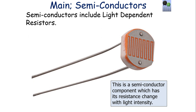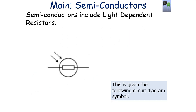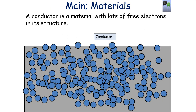Another example of a semiconductor is an LDR, or light-dependent resistor. This is a semiconductor component whose resistance changes with light intensity, represented by its circuit diagram symbol.